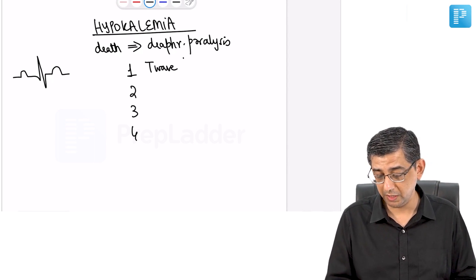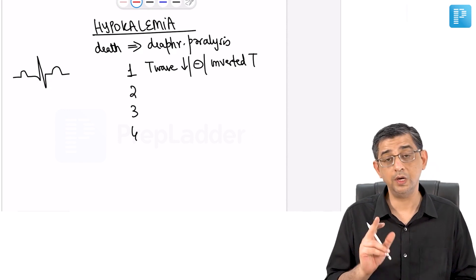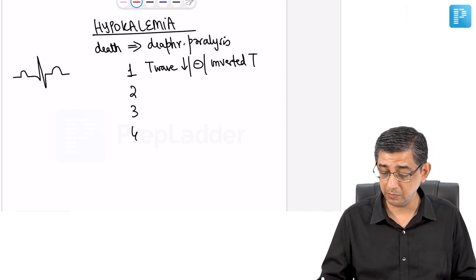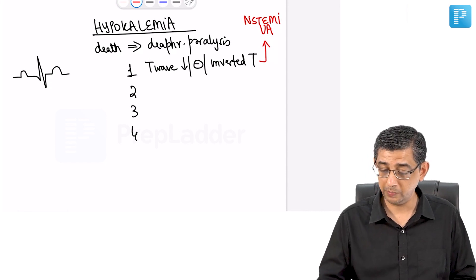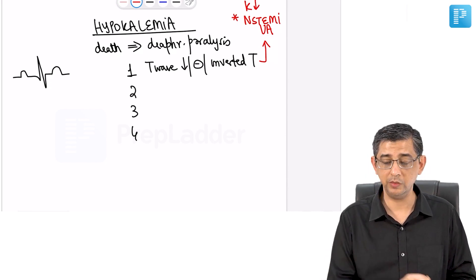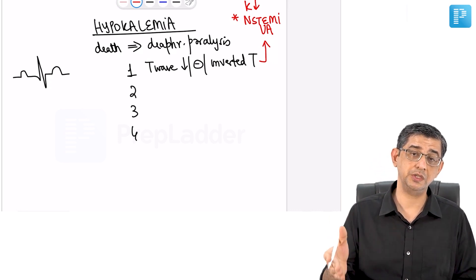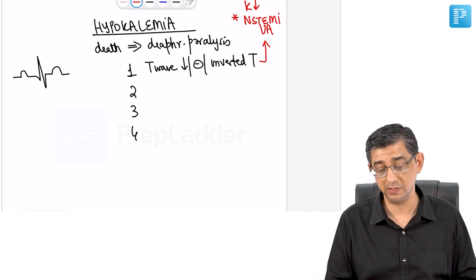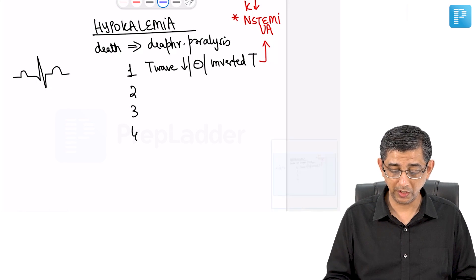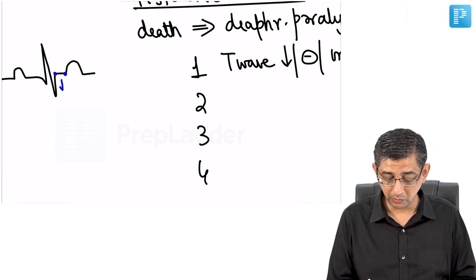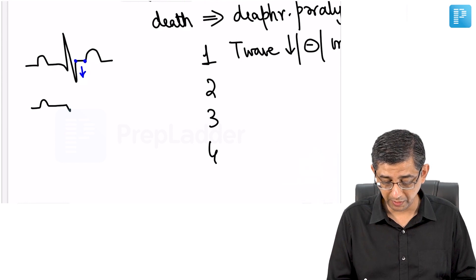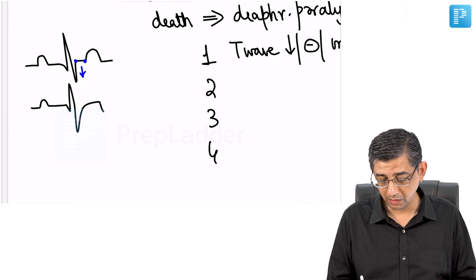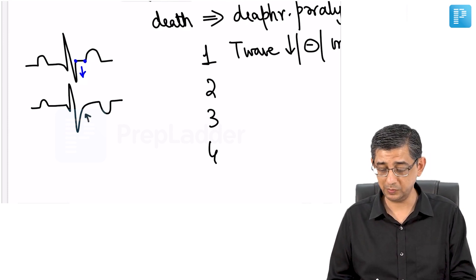The initial ECG finding in hypokalemia is a decrease in T wave amplitude, which can then become absent, and in some cases inverted. The three scenarios for inverted T waves are: unstable angina, non-ST elevation MI, and hypokalemia. Because ST segment loves to follow the T wave, as T wave goes down there will be ST segment depression developing in the patient — the opposite of what is seen in hyperkalemia.